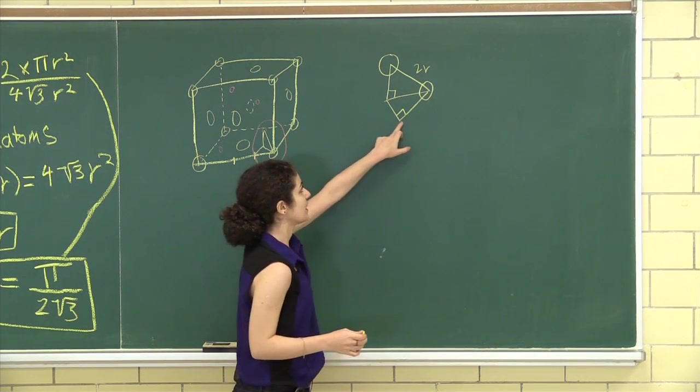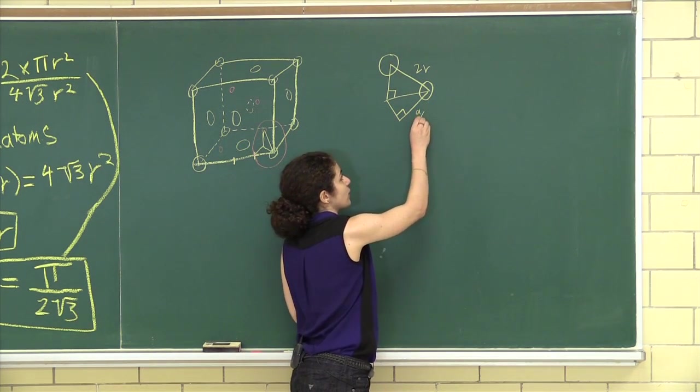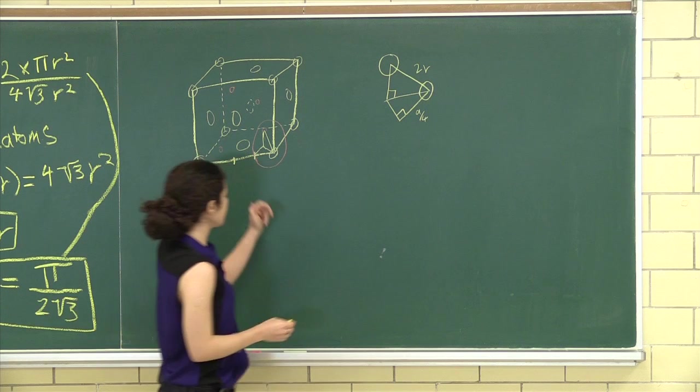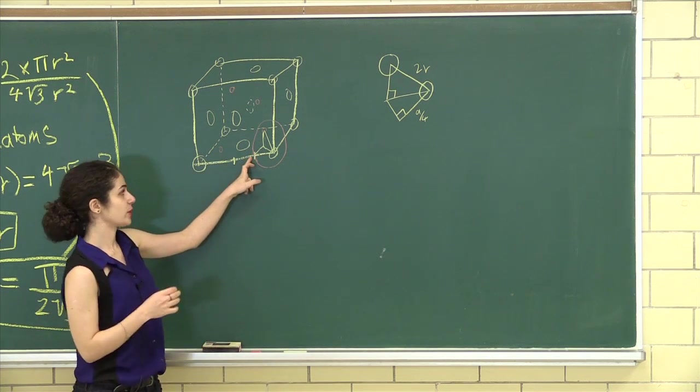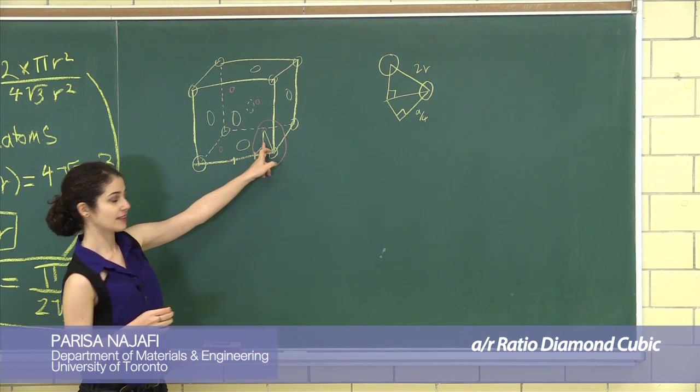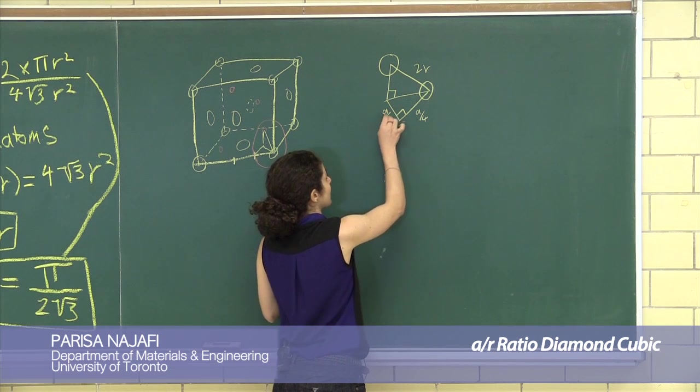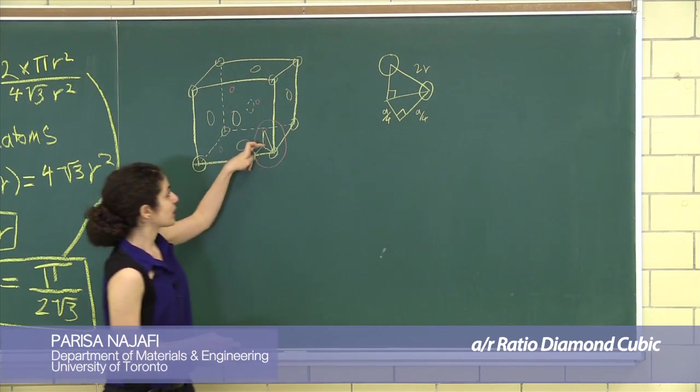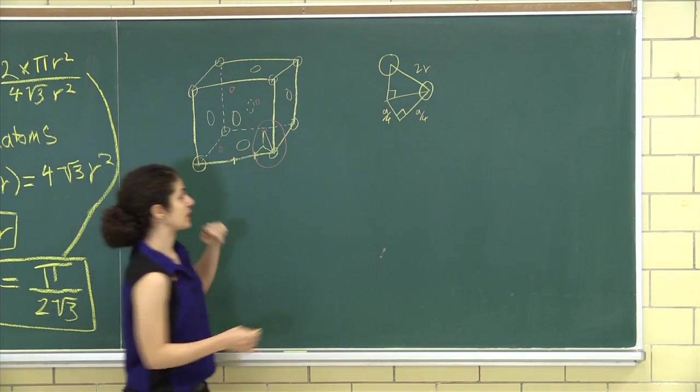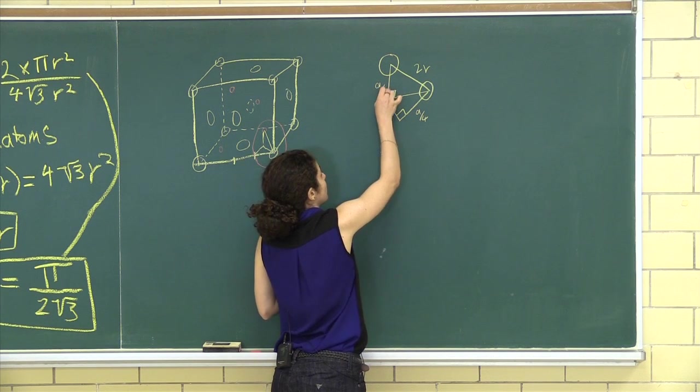That means that this is a over 4. And we take from the quarter way point, we go a quarter in to the plane. So this is another a over 4. And we go a quarter up from the plane. So that's another a over 4.